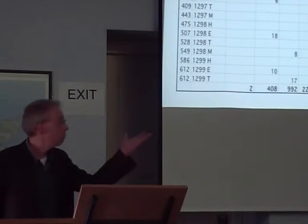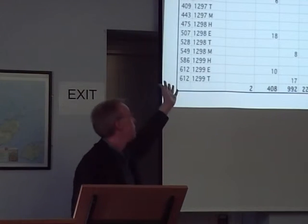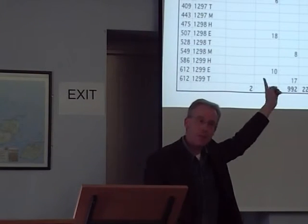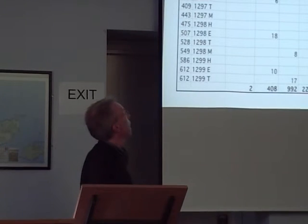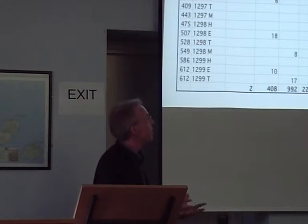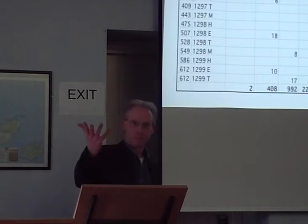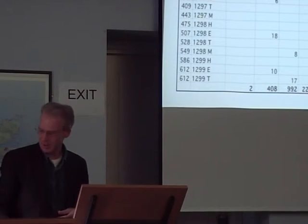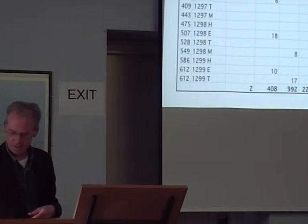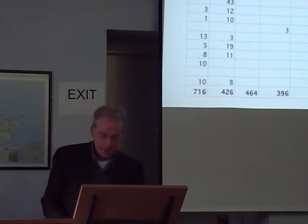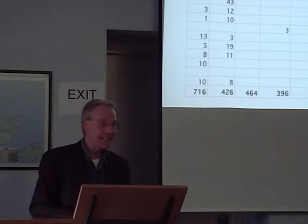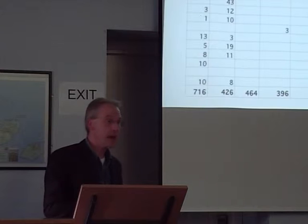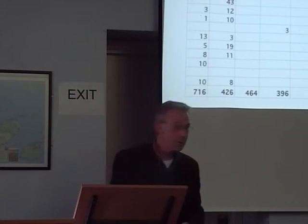We can look at this exchequer term by exchequer term from the time they started collecting the tax, and by county, and in some cases by subdivisions of the county. In Dublin, for example, we have city, Fingal and Valley — similar to the present-day divisions of South Dublin, Fingal and Dublin city. The headline figure for the total collected in the 1292 lay subsidy was just over nearly £10,500, which was a very large sum of money.